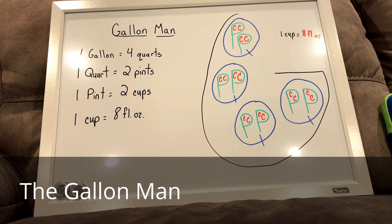Now, inside of each pint, we have two C's. So there are two C's inside of every P. And the C represents cups. So there are two cups inside of every pint.